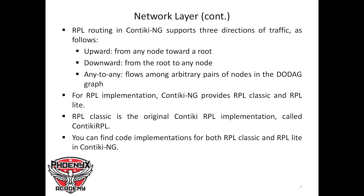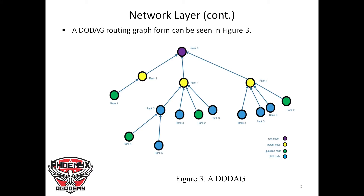An RPL routing implementation in ContikiNG is shown here. The root node forms the network and acts as the access point. The parent nodes each have children nodes — each node selects a node closer to the root as its parent. If a node wants to transfer a packet to the root, it relays via the parent node. A node with no children is referred to as a leaf node.